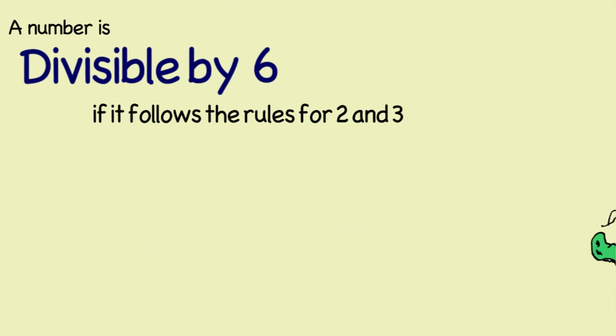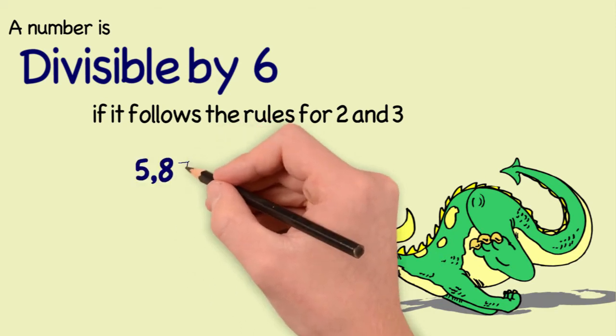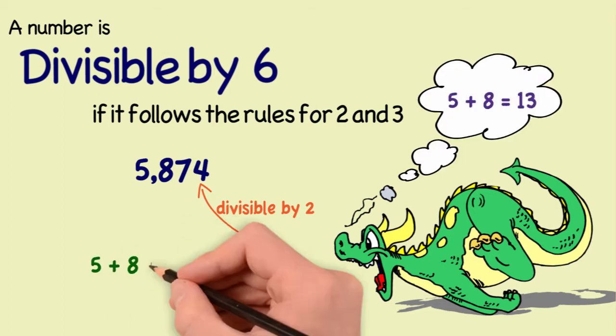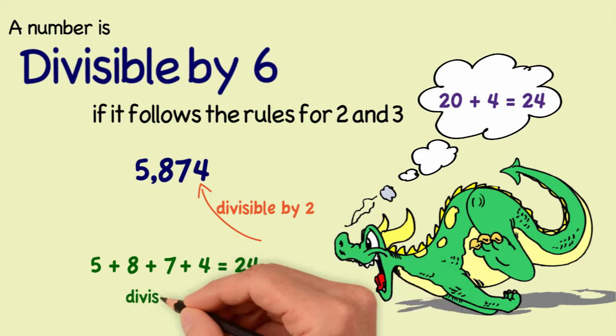Next, we have 6. The rule for 6 is, is it divisible by 2 and 3? For our example number, we have 5,874. We check, is it divisible by 2? 4 is an even number, so it is. Next, is it divisible by 3? 5 plus 8 is 13, plus 7 is 20, plus 4 is 24. 24 is divisible by 3.